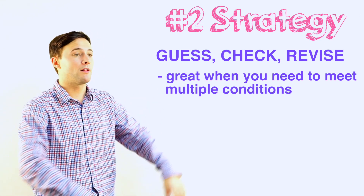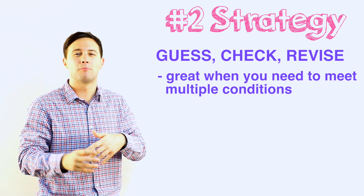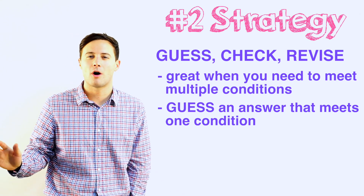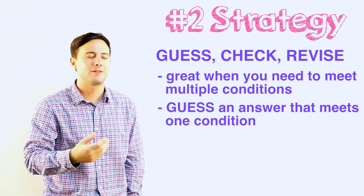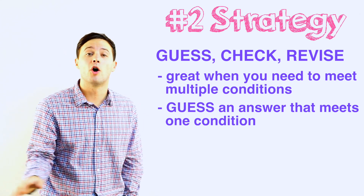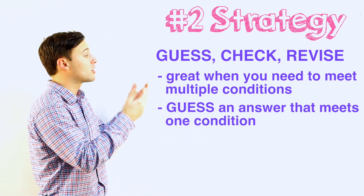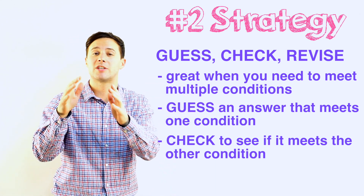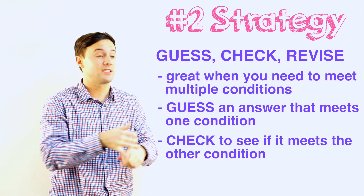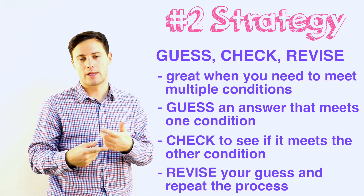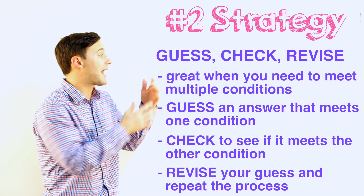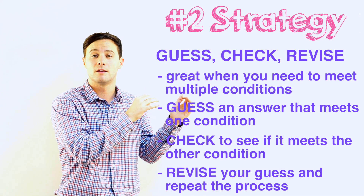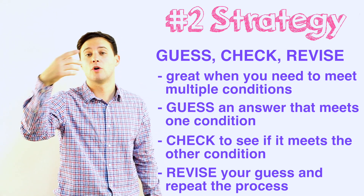It'll maybe make more sense when you see the example. The first step in Guess, Check, and Revise is to guess an answer that meets one of those conditions. Don't think too hard — a lot of times people stress out about what their guess should be. Don't. Just make a guess. After you make that first guess, then we check it against the other condition. We already know our first guess met one condition; now we check to see if it meets the other. If it does, you're done — you solved it. If it doesn't, then we revise our guess, using information from checking our first guess to make a better guess. Adjust your guess based on what you just learned, and then go through the whole process again.